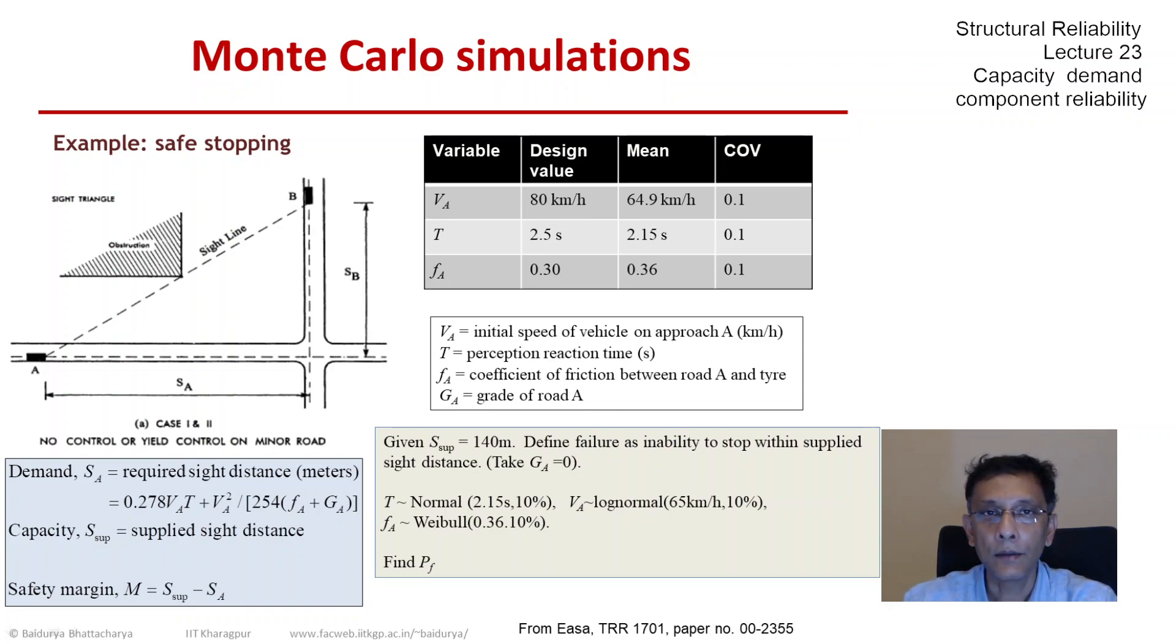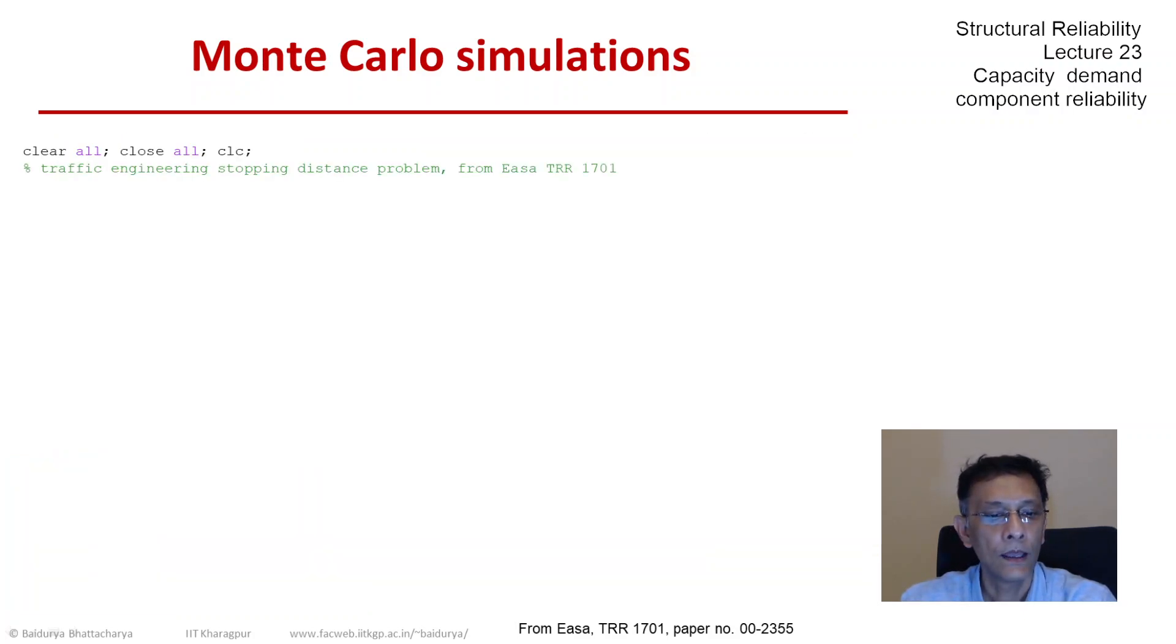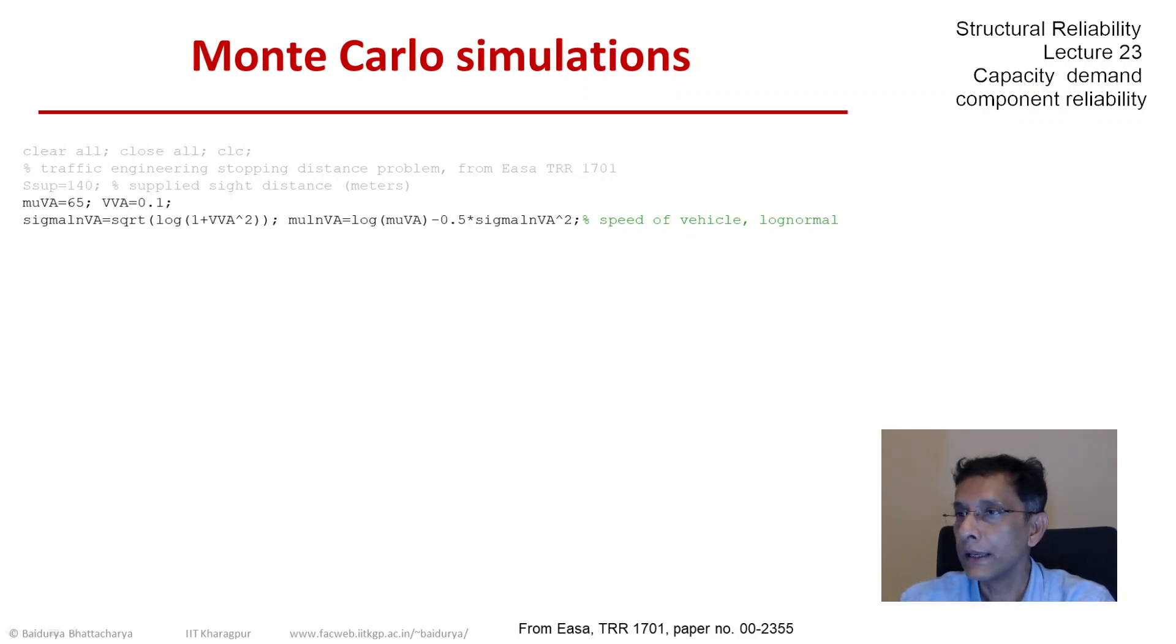And the code is in the next slide. And I'm going to go line by line through that code. So let us first define all the parameters of the problem: the supplied sight distance in meters, the mean of the speed, the COV of the speed from which we get the lognormal parameters.